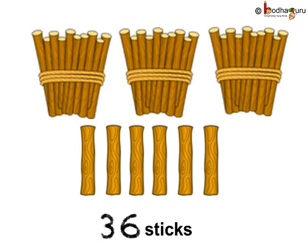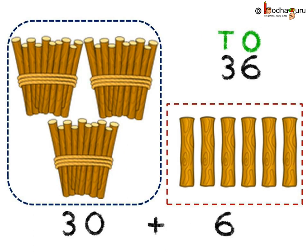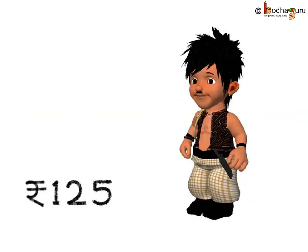Let us try some more numbers. Bola got 36 sticks. How can we write this number in expanded form? 36 means there are 3 tens and 6 ones. So, 36 in expanded form can be written as 30 plus 6.